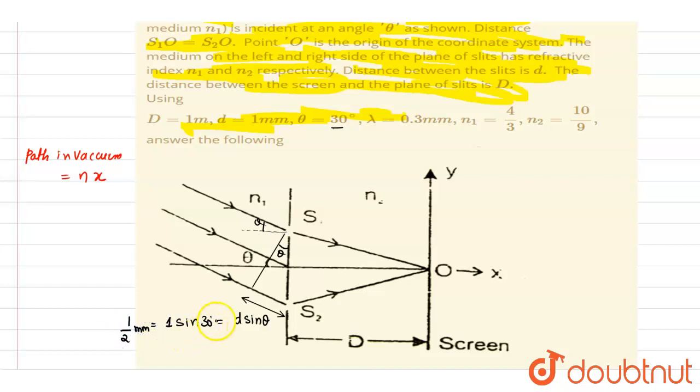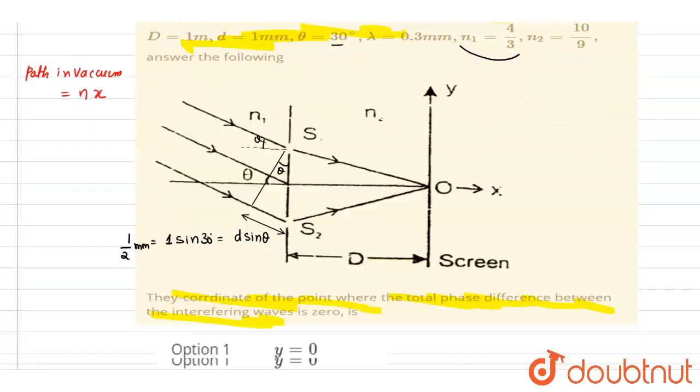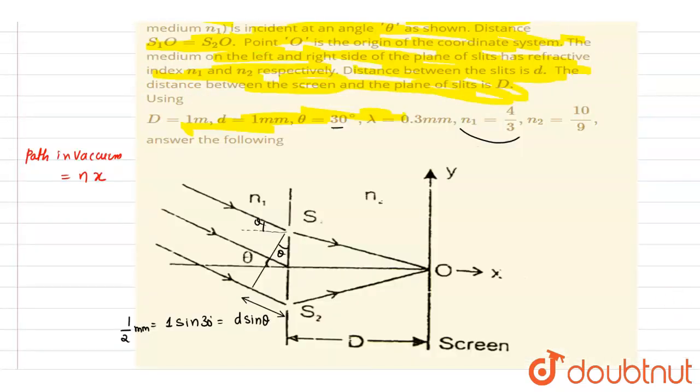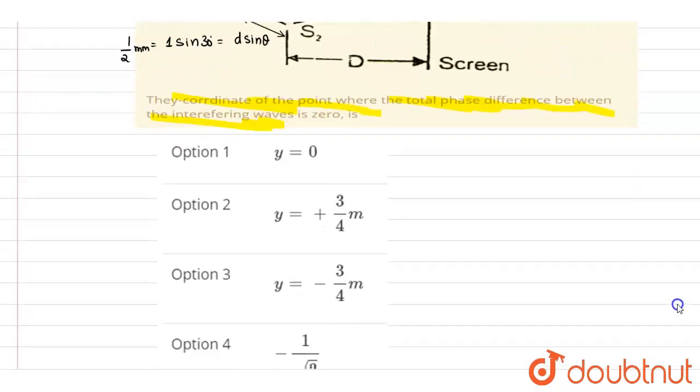So half mm is the path difference that the two waves are having before entering into the slit. Now if you see the medium refractive index, it is 4 by 3. So I will convert the path difference into the vacuum.